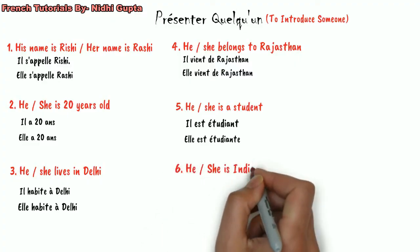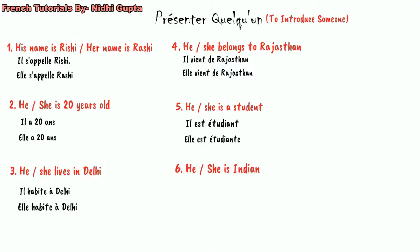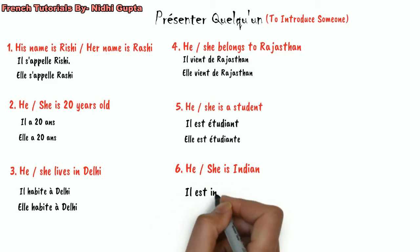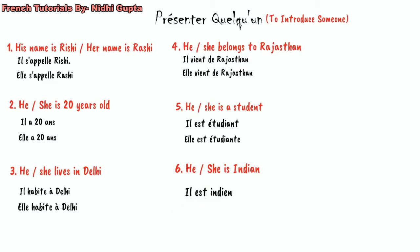Next, we can talk about nationality. If the question arises about the nationality of Rishi or Rashi, for Rishi we say 'il est indien,' and for Rashi we say 'elle est indienne.' So he is Indian and she is Indian.